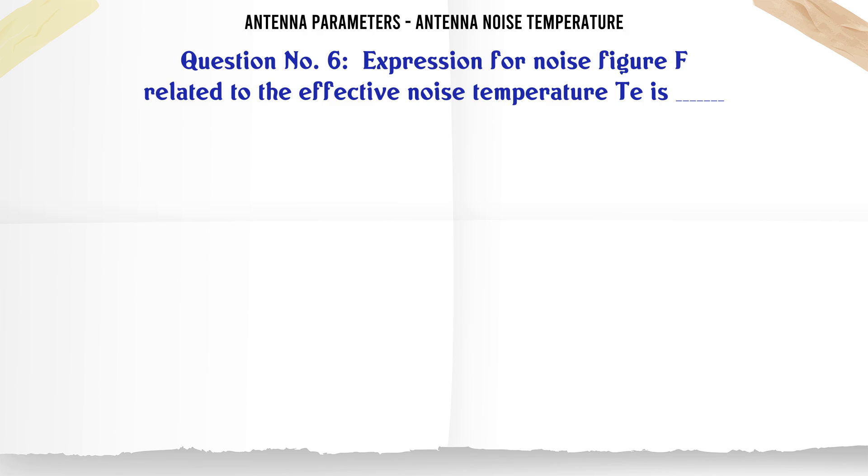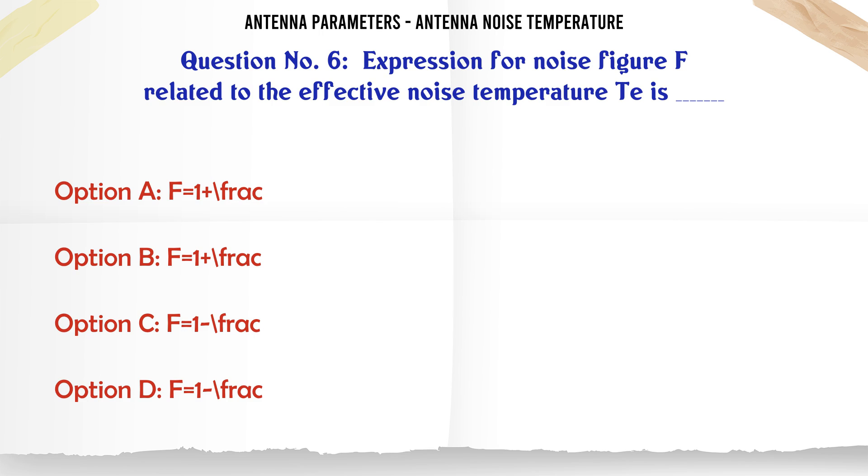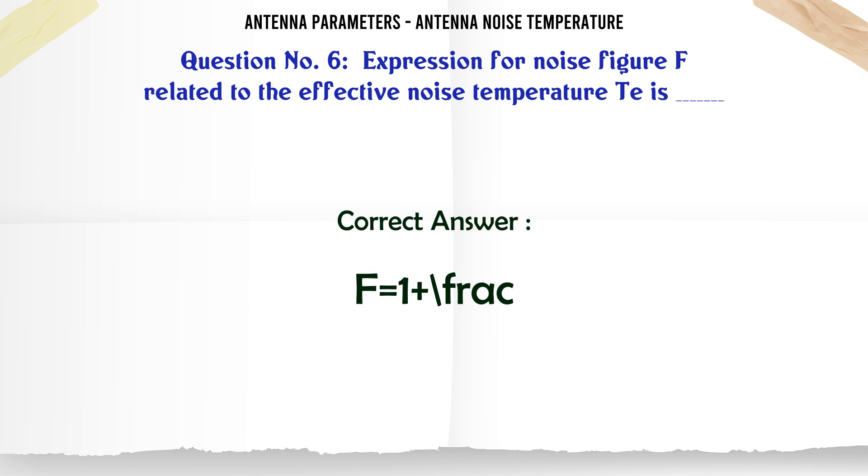Expression for noise figure F related to the effective noise temperature T_E is: Option A: F equals 1 plus frac T_E over T_0. Option B: F equals 1 plus frac T_0 over T_E. Option C: F equals 1 minus frac T_E over T_0. Option D: F equals 1 minus frac T_0 over T_E. The correct answer is F equals 1 plus frac T_E over T_0.